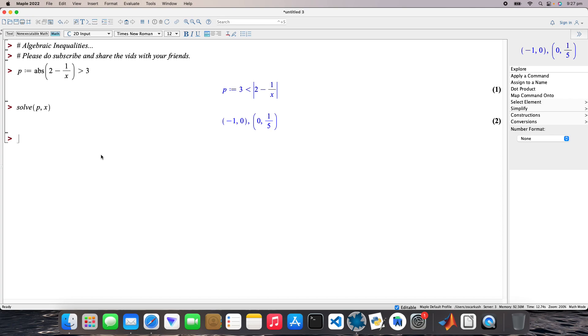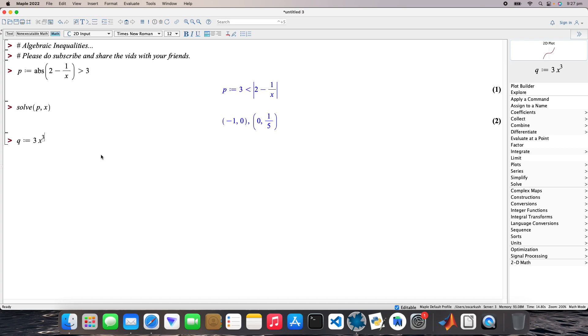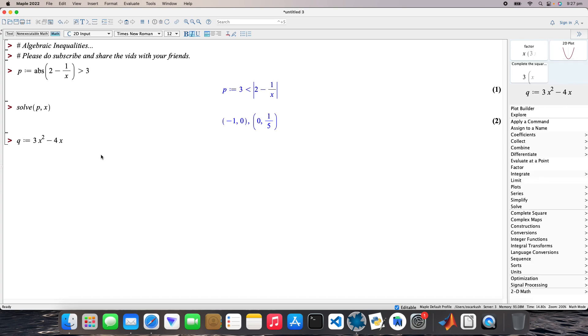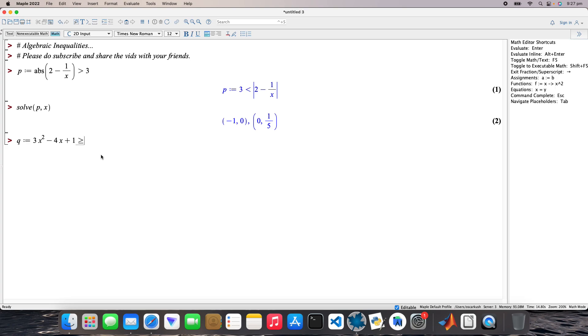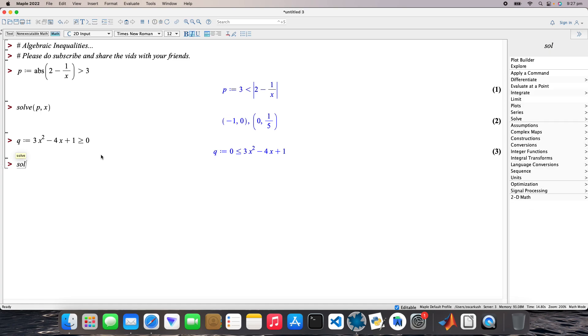Clicking on to the next one as well, so I call it Q. That's going to be 3x squared minus 4x plus 1 is greater than or equal to 0. And then solve Q for x.